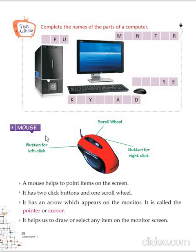Now, let's come to the mouse. This is a mouse. It has a left button, right button, and the scroll wheel. It has an arrow which appears on the monitor, which we call the pointer or cursor. By the help of the mouse, you can draw or select any item on the monitor screen.